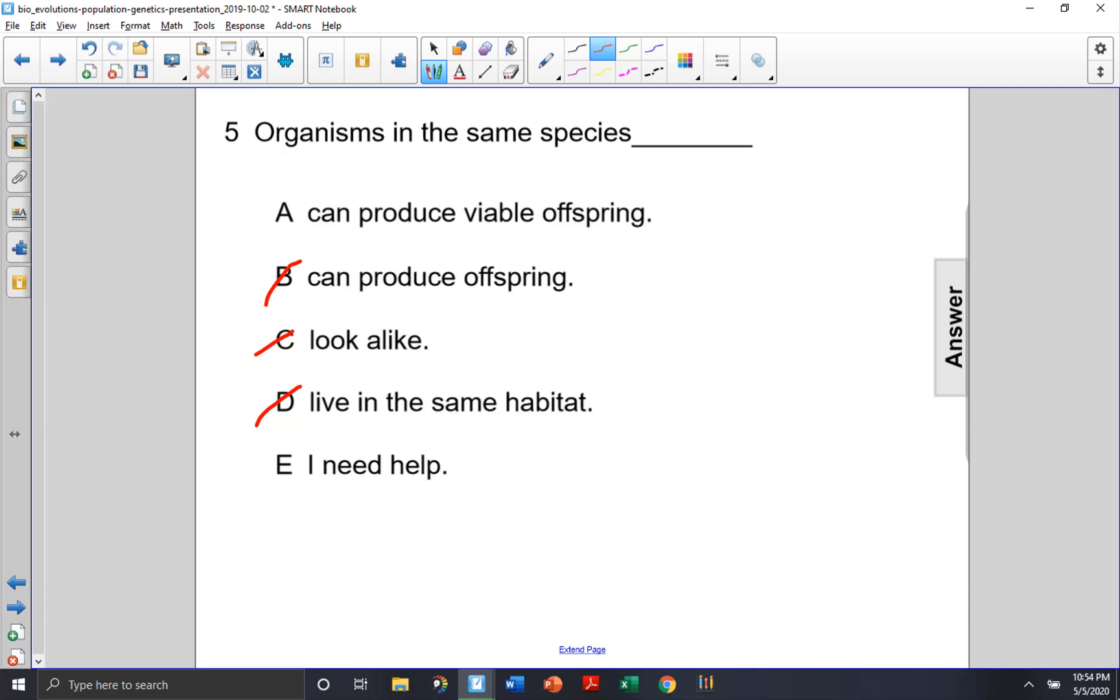And choice A: can produce viable offspring. So offspring that could produce more offspring. That's what defines a species. So choice A is the correct answer.